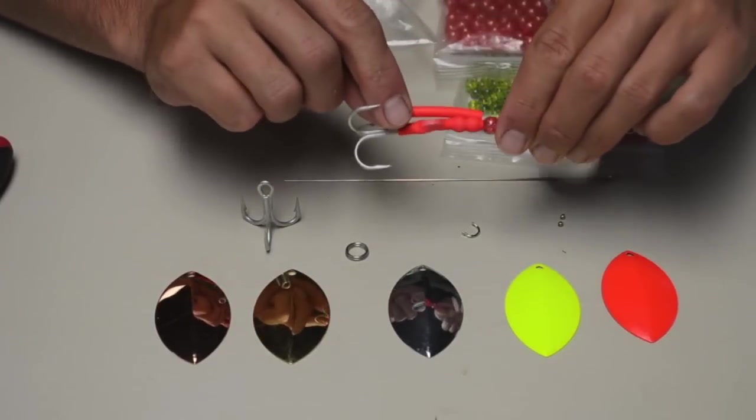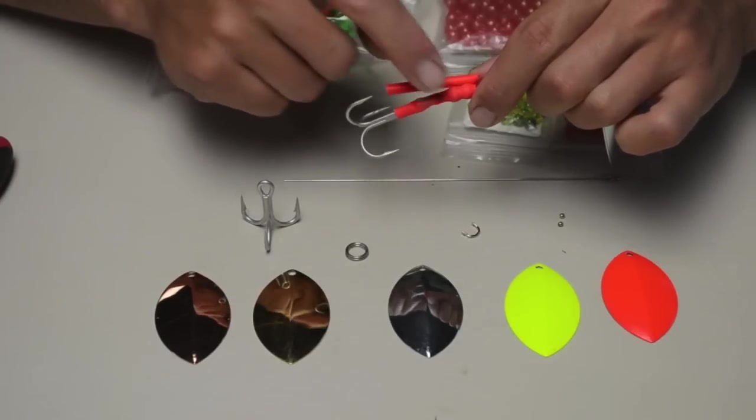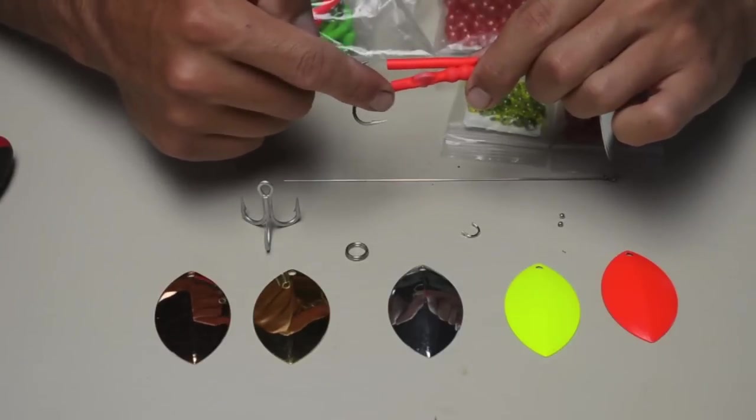An inch and a half is to cover the two lower beads. You basically want enough tubing to cover the two lower beads, the split ring, and a portion of the shaft of the hook.